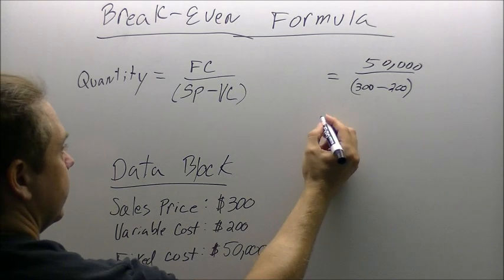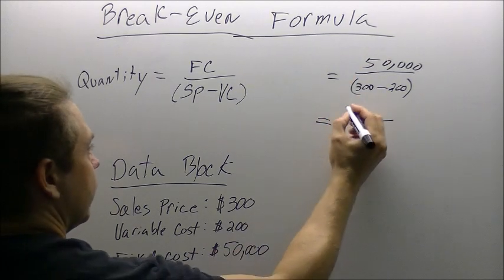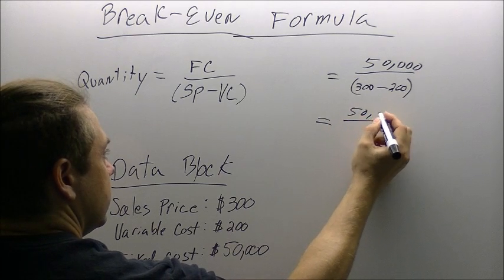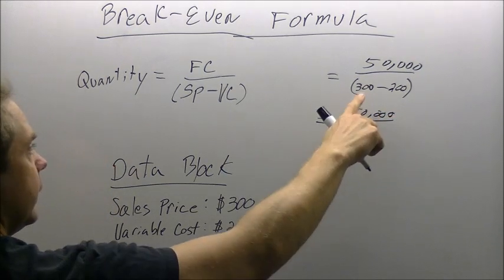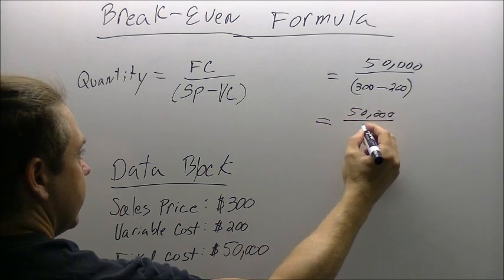Alright, next step we are going to set up our structure, drop the $50,000, and then we are going to solve inside our parentheses. $300 minus $200 is going to give us $100.